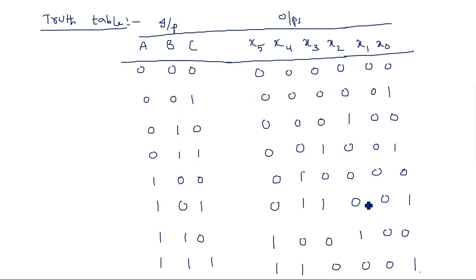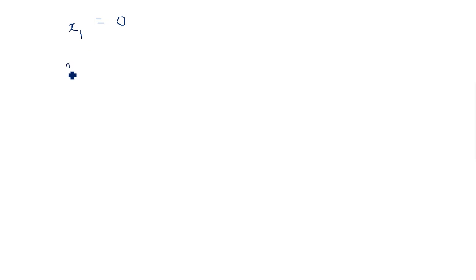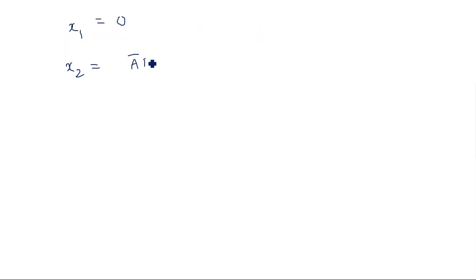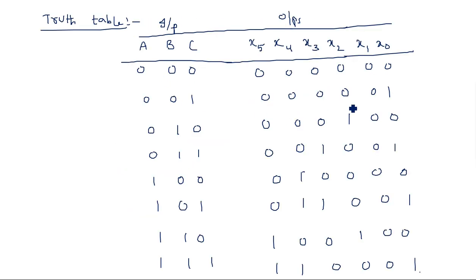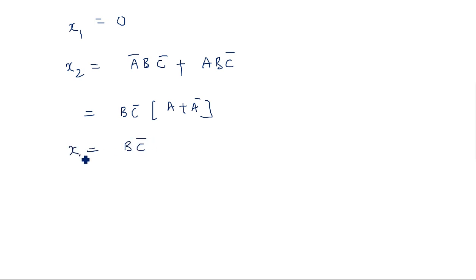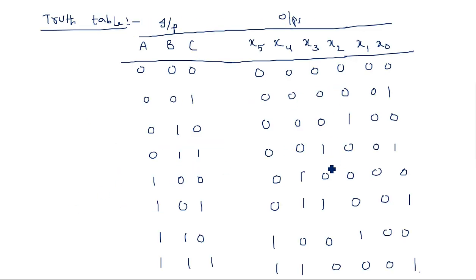Similarly, X1 has no 1s anywhere in the truth table, so X1 = 0. Coming to X2, it is 1 at Ā·B·C̄ and A·B·C̄. Taking B·C̄ common gives (A + Ā) = 1, so X2 = B·C̄.